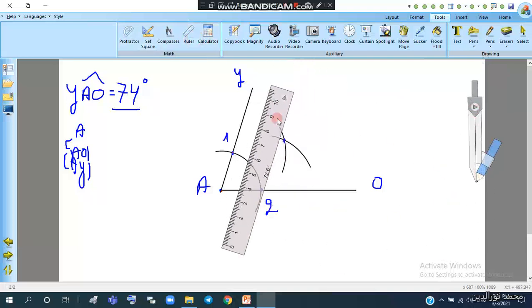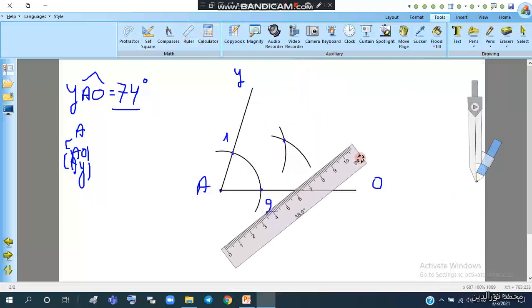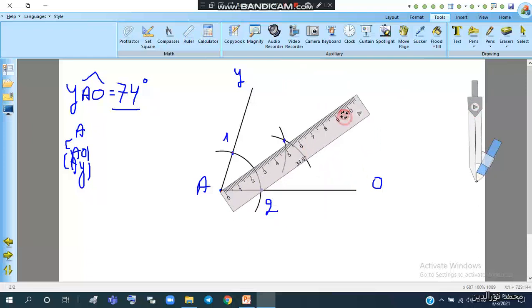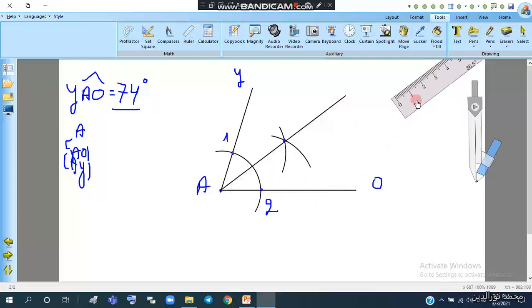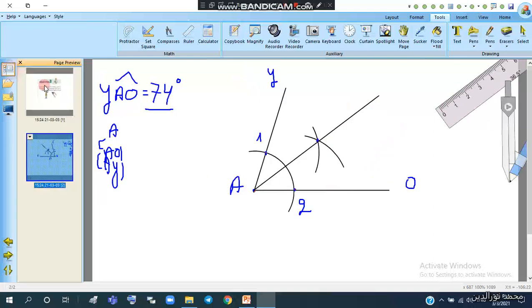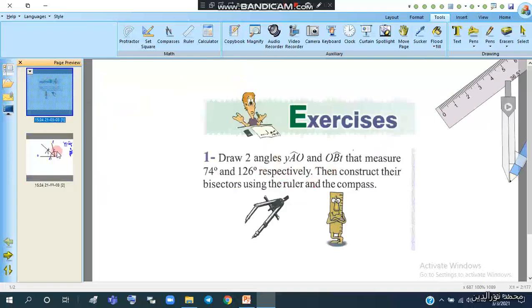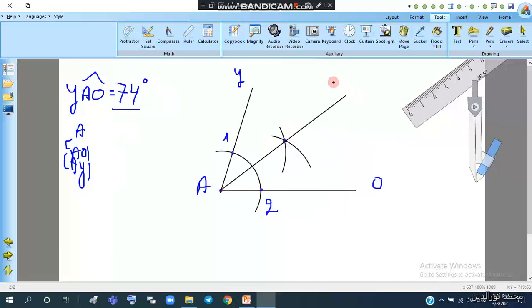Using the ruler, we connect the vertex with the intersection of the two arcs. This is the bisector AI. To confirm the accuracy, we know that angle YAI equals angle IAO, and they equal angle YAO over 2.